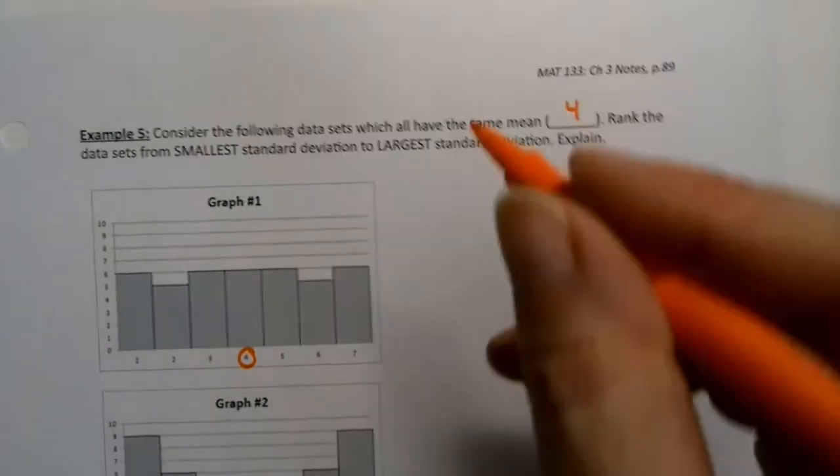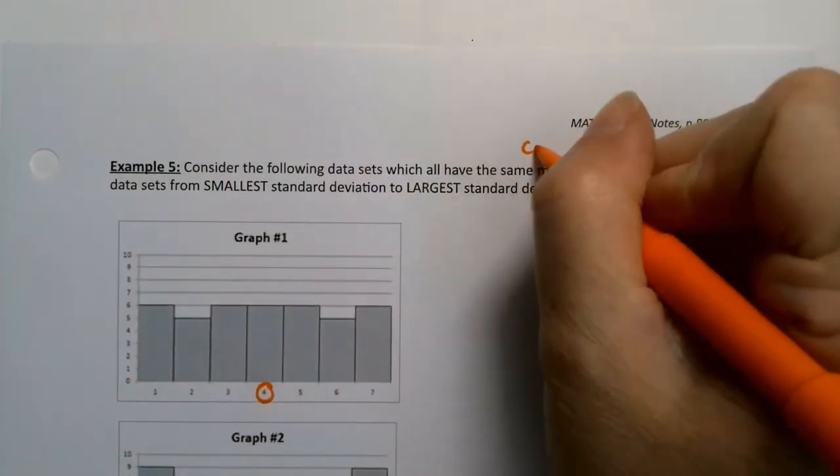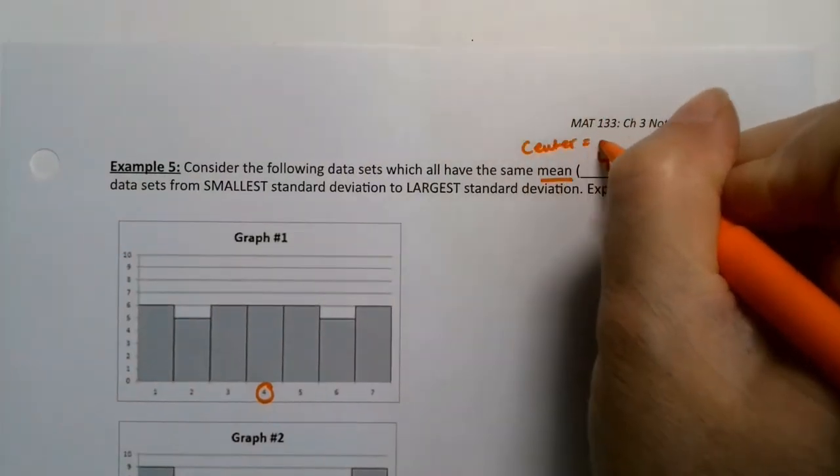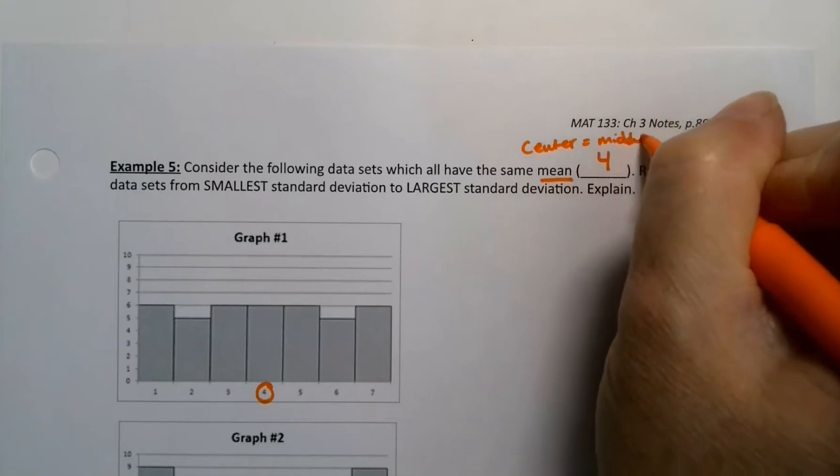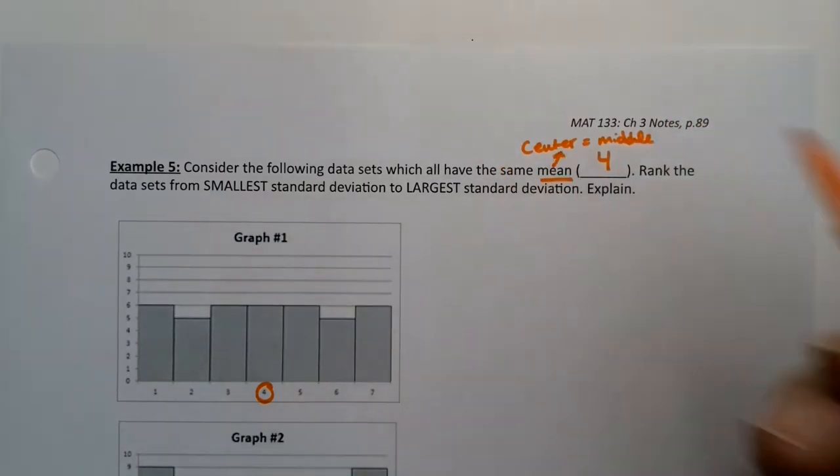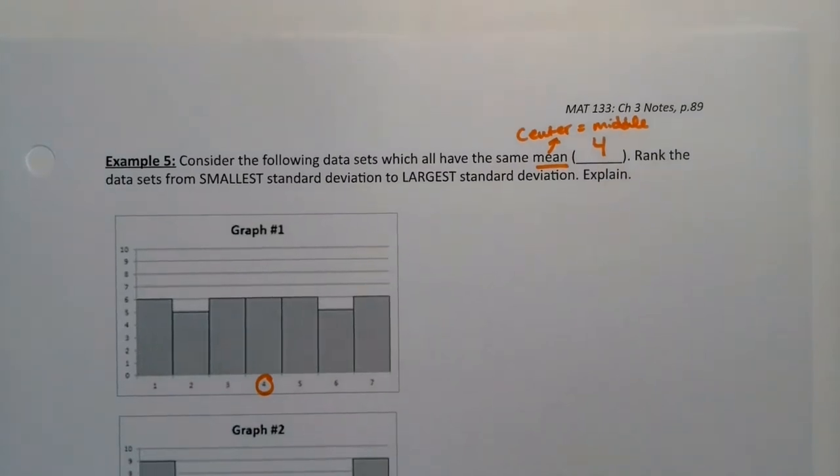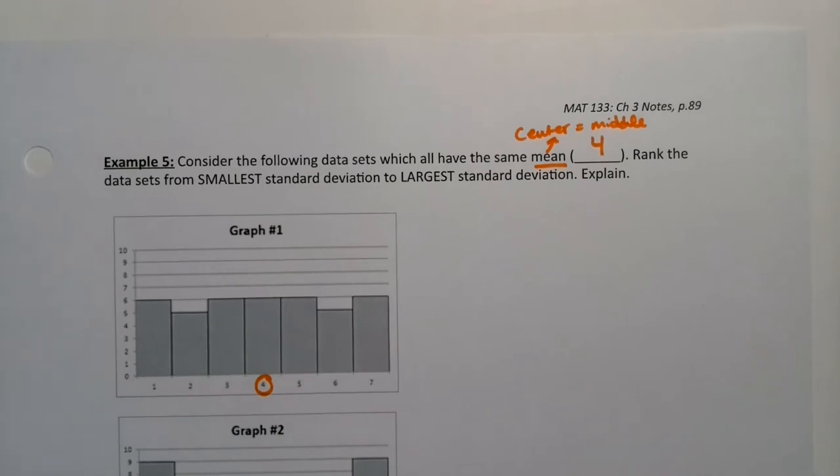See how the center is four for every single one of them? It's the middle, right? The mean is the center or the middle. Okay, so now which one of these graphs has the largest standard deviation, and which one has the smallest standard deviation? Hmm, interesting question.